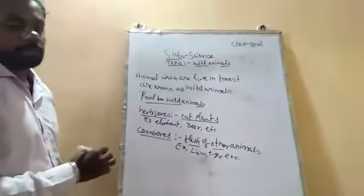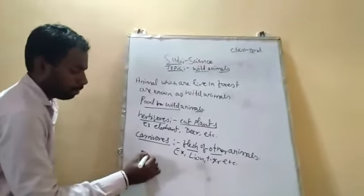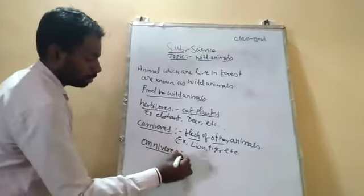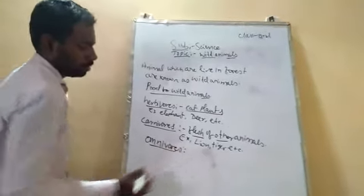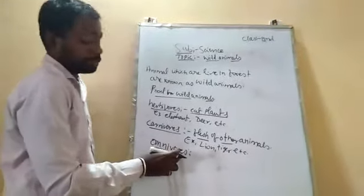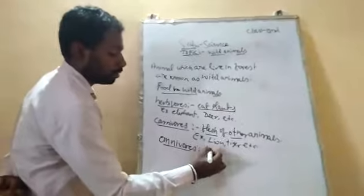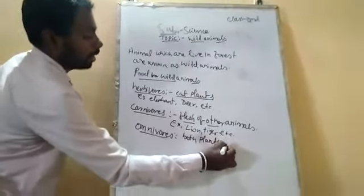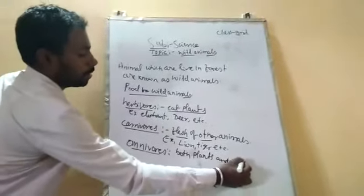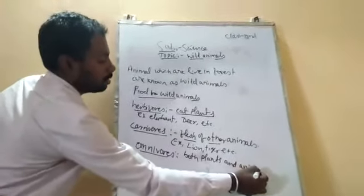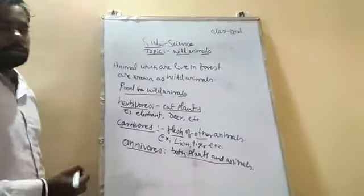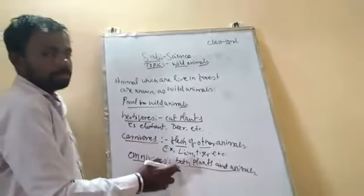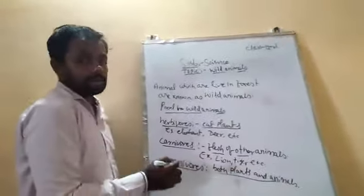The next type of animal is the omnivores. Omnivores means the animals eat both plants and animals — plant and animals. They are known as omnivores. Those animals that eat both plants and animals are known as omnivores.